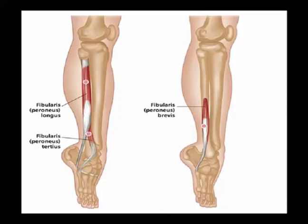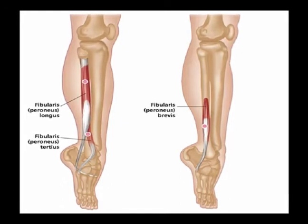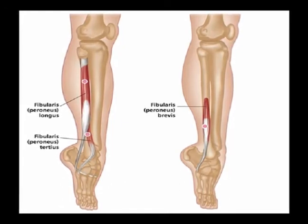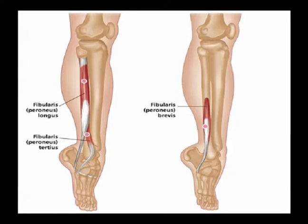Hello, and welcome to Two Minutes of Anatomy. I am Dr. Donald Lozello of Championship Chiropractic in Las Vegas, Nevada. Today's topic is the muscles on the lateral aspect of the lower leg, the peroneus longus and the peroneus brevis.